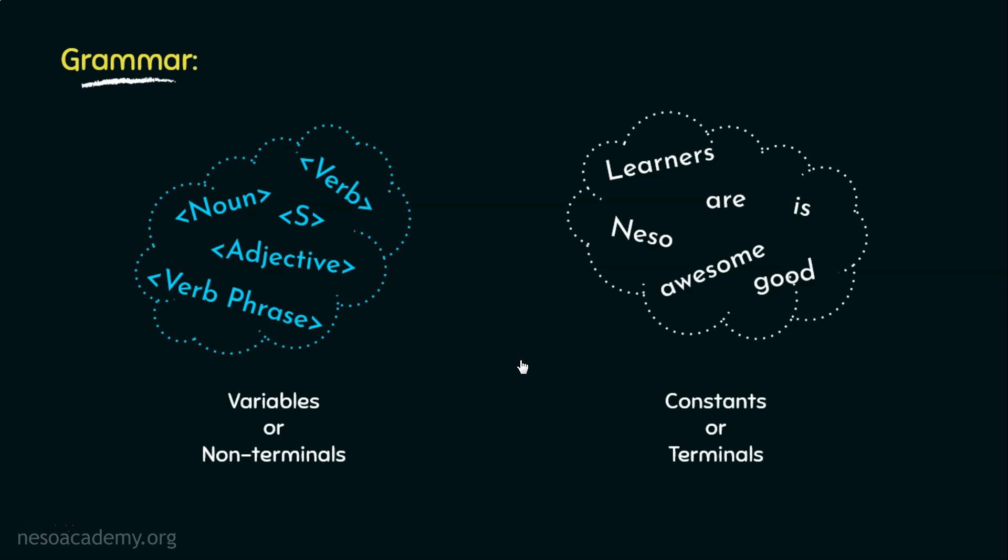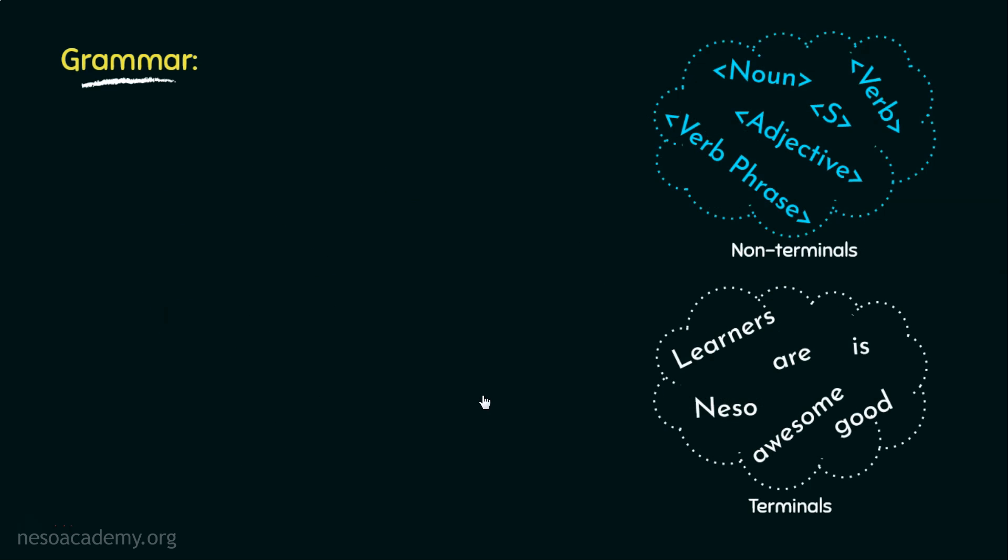Now, coming back to our discussion of grammars, we have the set of non-terminals in one hand and the set of terminals on the other hand. Now, let's recall the generation process for this specific instance. Sentence can be written as noun followed by verb phrase.